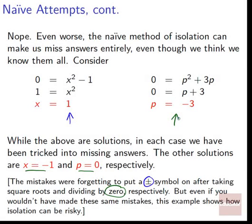Even if you personally wouldn't have made those same mistakes, this example shows how easy it is to forget things like the ± sign or the possibility of dividing by zero in the heat of doing the math. So it's risky to try this method of isolation. We need something that works better.